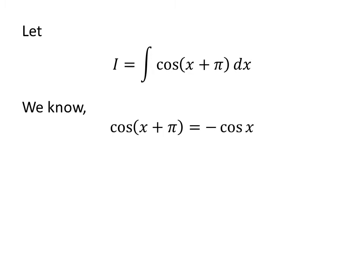We know the trigonometry identity: cosine of pi plus x is equal to minus cosine of x. The link of the video appearing in the upper right corner contains the proof of this trigonometry identity. The link is also given in the description section.